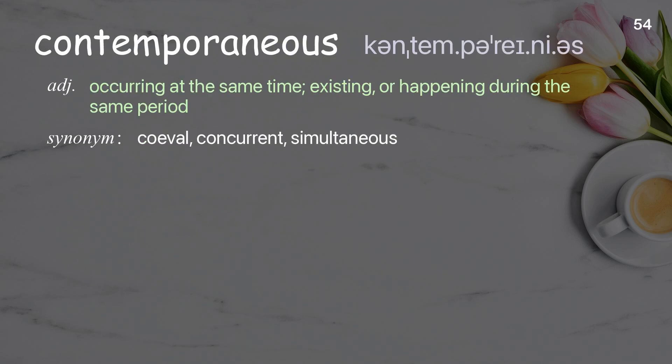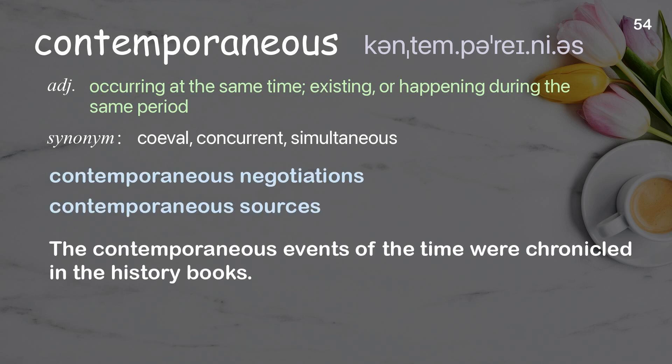Contemporaneous: Occurring at the same time; existing or happening during the same period. Examples: Contemporaneous negotiations. Contemporaneous sources. The contemporaneous events of the time were chronicled in the history books.